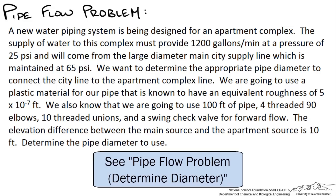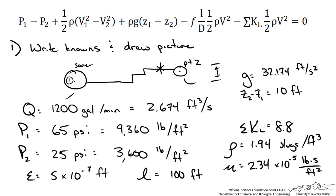In a previous screencast, we went through the following problem using a guess and check iterative method. The first thing we did was take our energy equation shown here, write down all of our knowns, convert them to the appropriate units, and simplify our energy equation.